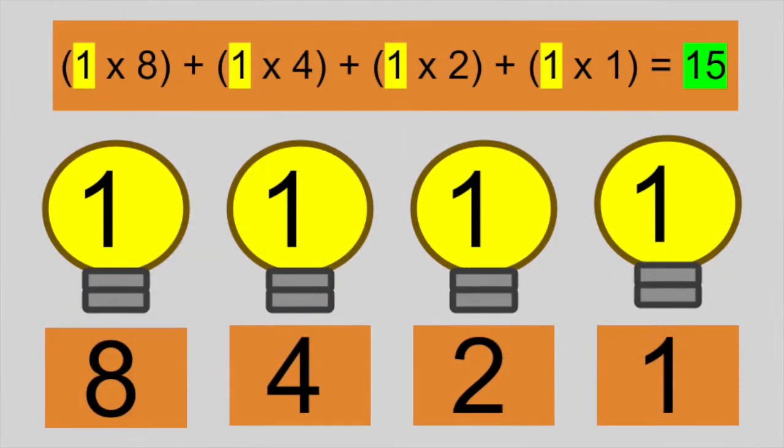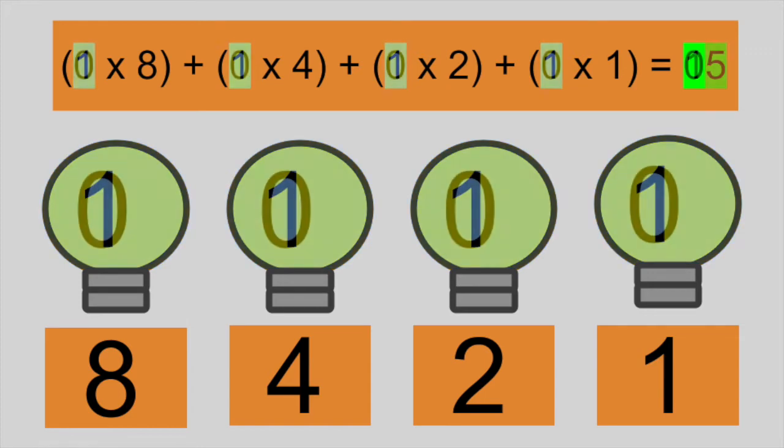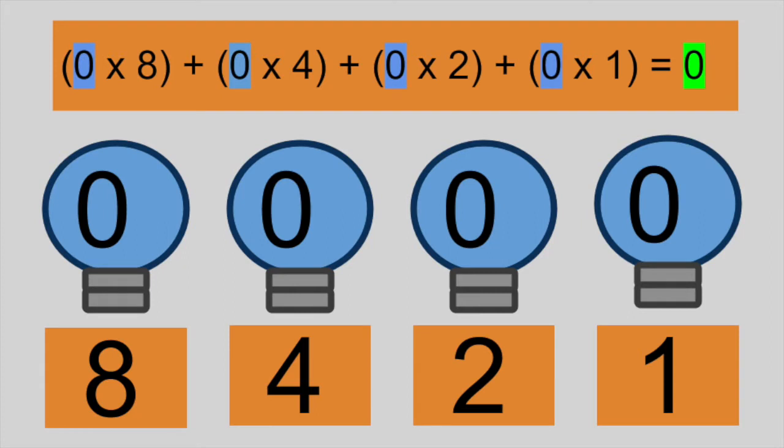When all 4 light bulbs are on, we can add up their values to get the number 15, since 8 plus 4 plus 2 plus 1 is 15. When a bulb is on, we can imagine that we are multiplying the power of 2 by 1. When the light bulb is off, we multiply that power of 2 by 0.